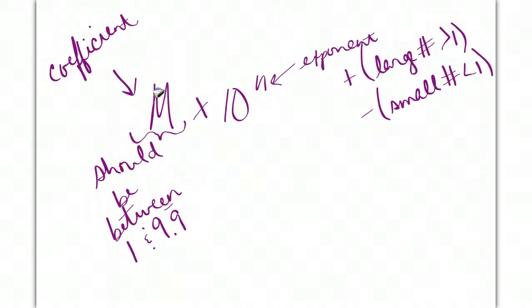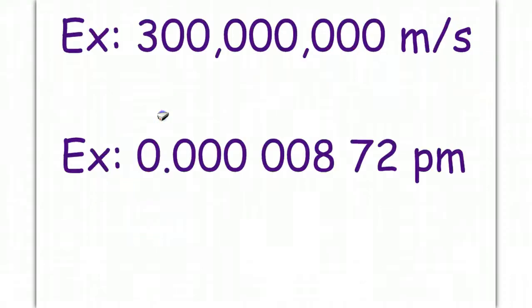Your mantissa, or coefficient, should always be between 1 and 9.9 repeating. In other words, it should never be 10 or greater. The number should end up being between 1 and 9.9. Technically, it could be greater than 10, but we want to keep it between 1 and 9.9.